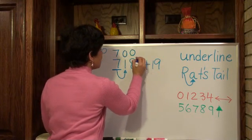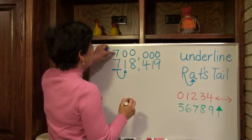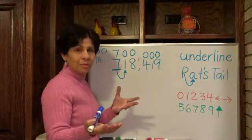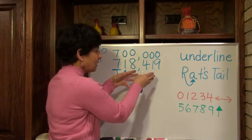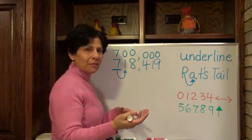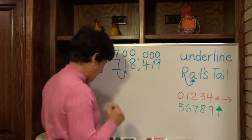So let me turn them all to zero and my number becomes 700,000. So let's say if your library had 718,419 books and you wanted to tell a friend how many books there are, you might say we have about 700,000 books. Okay?